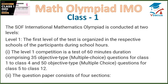The SOF International Mathematics Olympiad is conducted at two levels. Level 1 — the first level of the test is organized in the respective schools of the participants during school hours. Level 1 competition is a test of 60-minute duration comprising 35 objective type multiple choice questions for class 1 to class 4, and 50 objective type multiple choice questions for class 5 to class 12. The question paper consists of four sections.